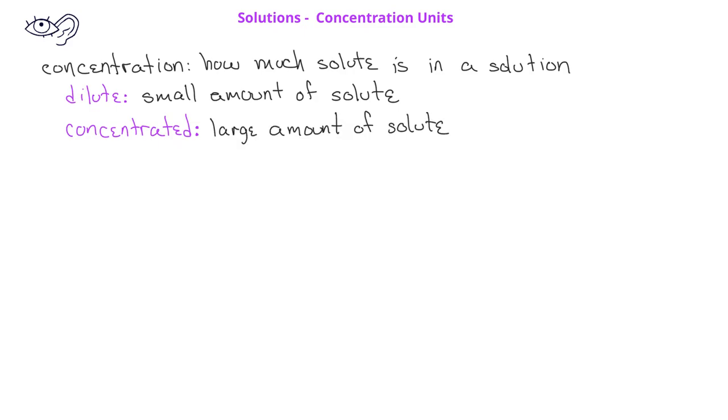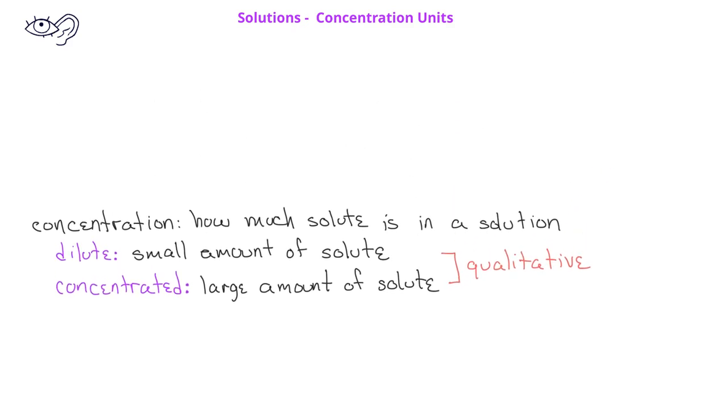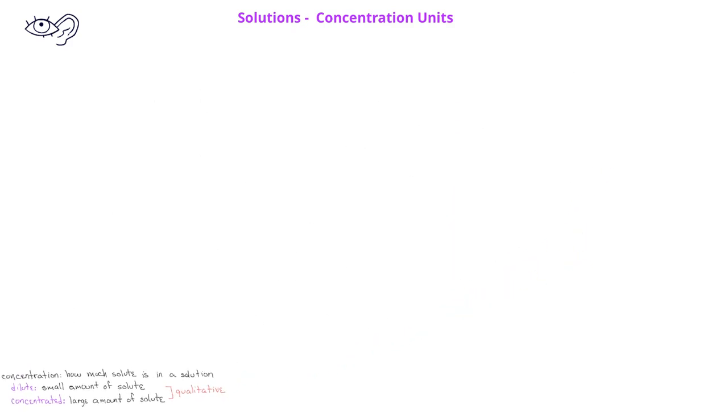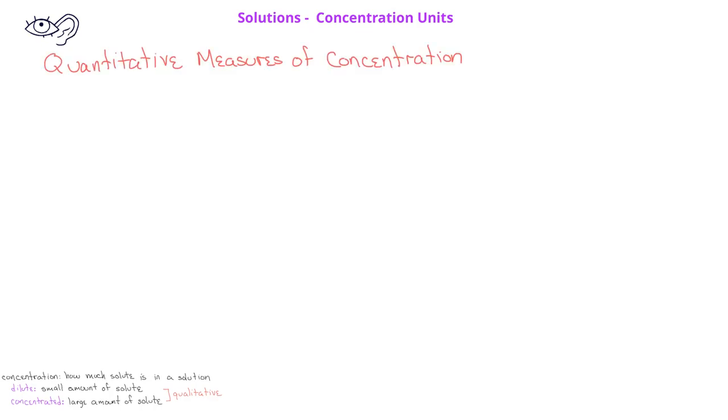But when we talk about solubility, we could also be more quantitative. In other words, we could put numbers to the concentration of the solution. When we talk about quantitative measures of concentration, we can use different kinds of units depending on what we find most important. Most measures of concentration are defined by stating how much of the solute is present in a certain amount of the solution.